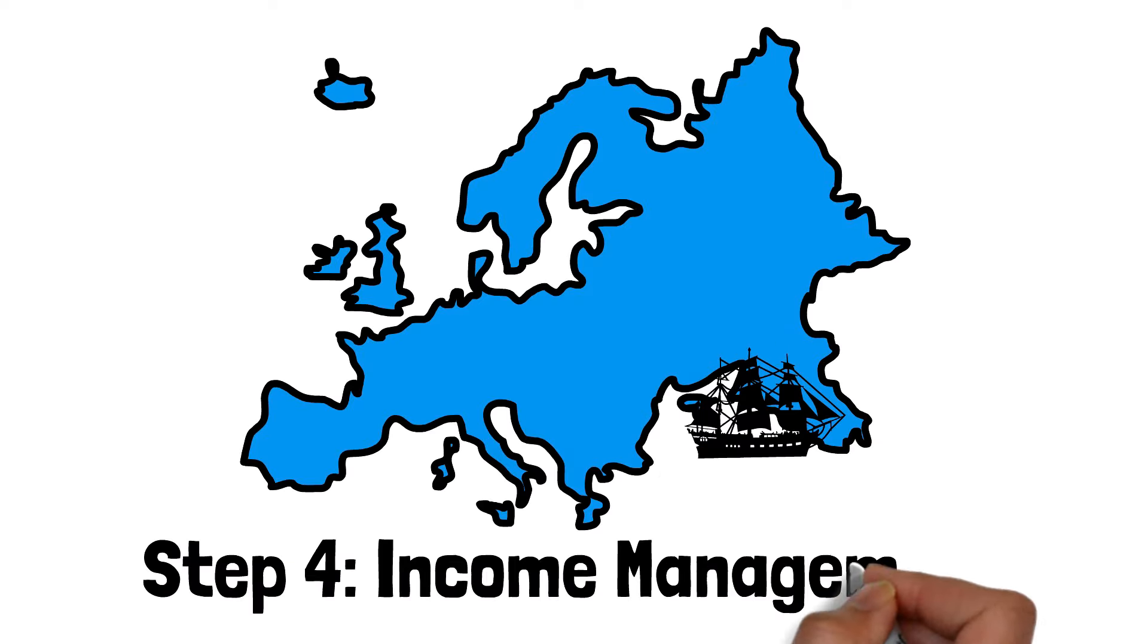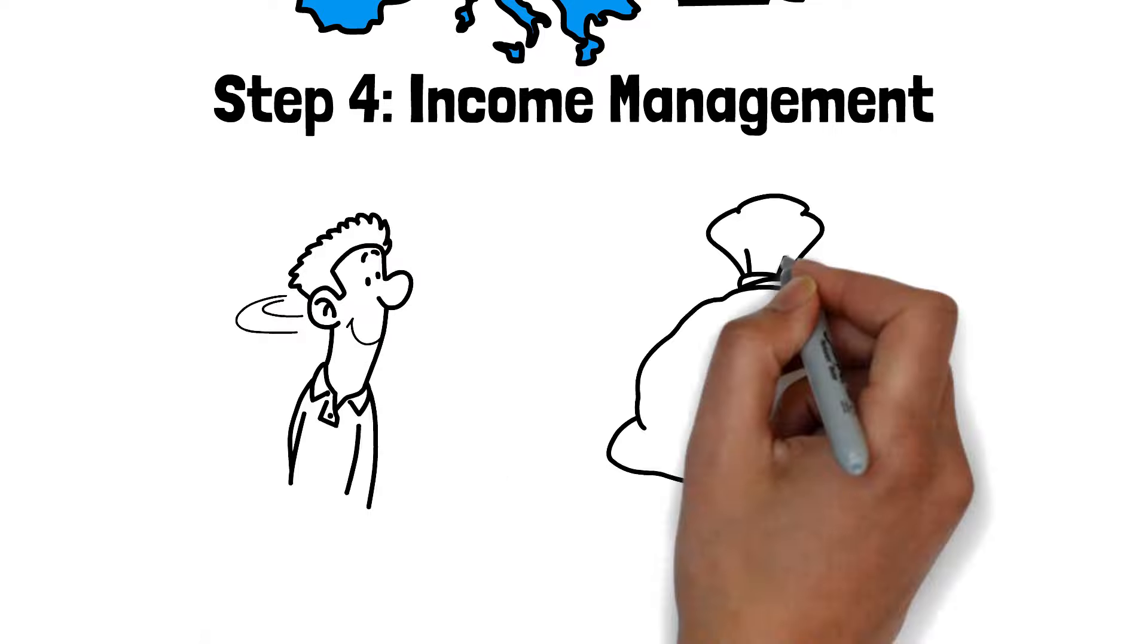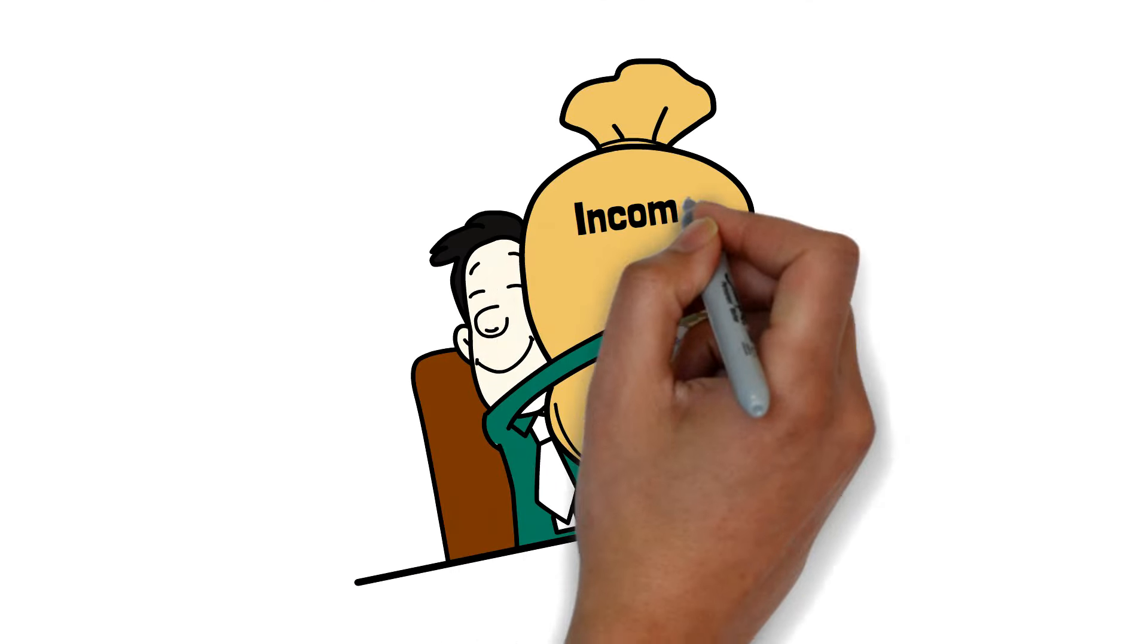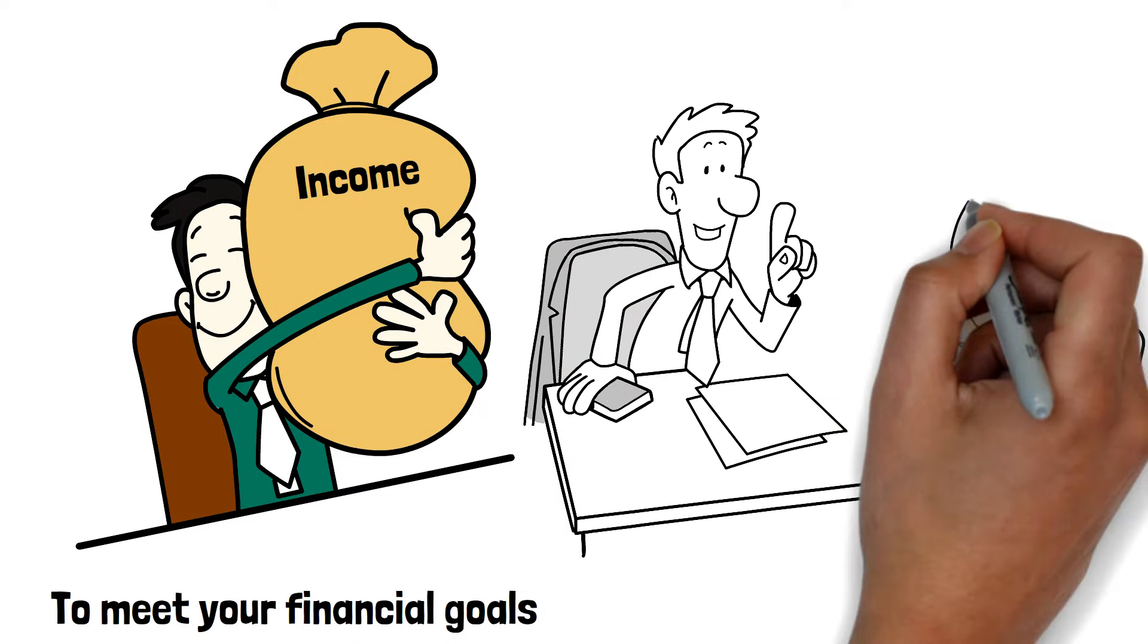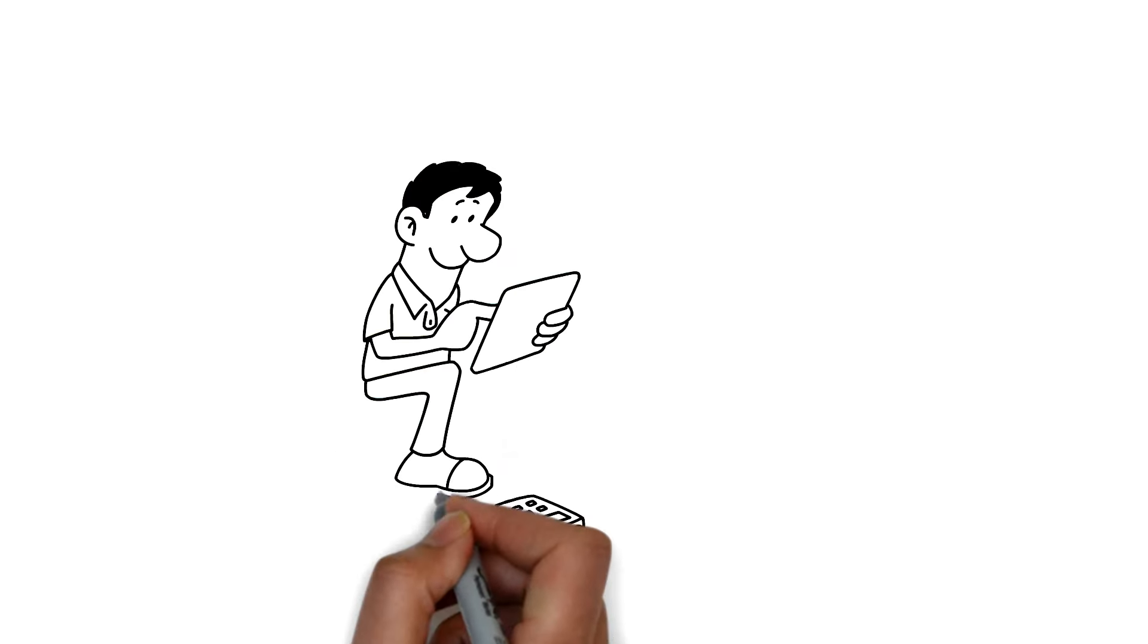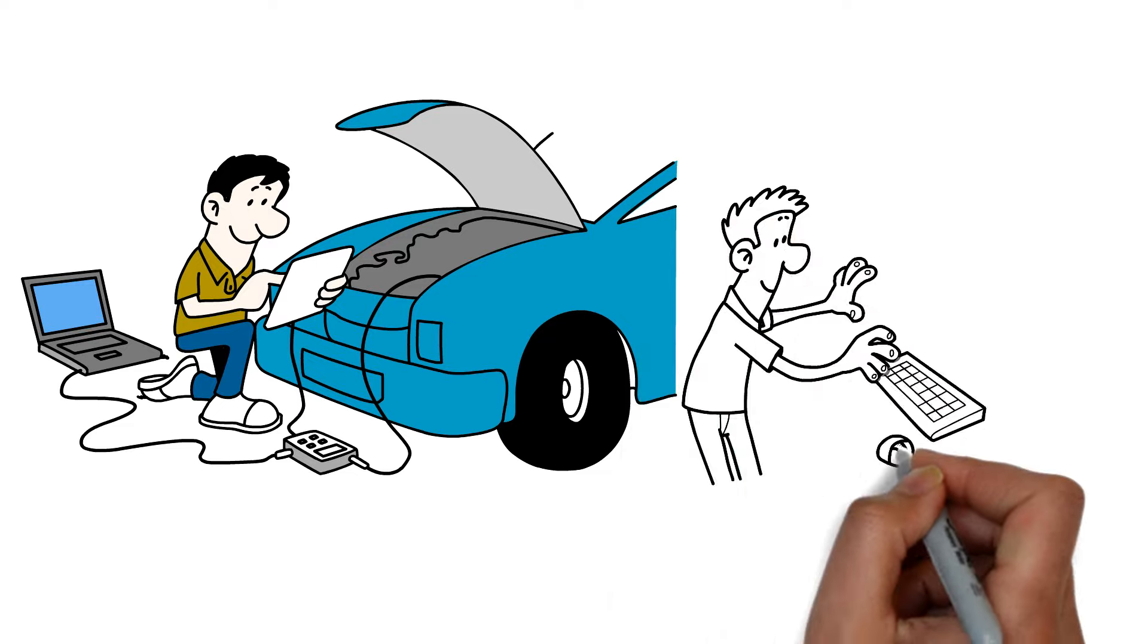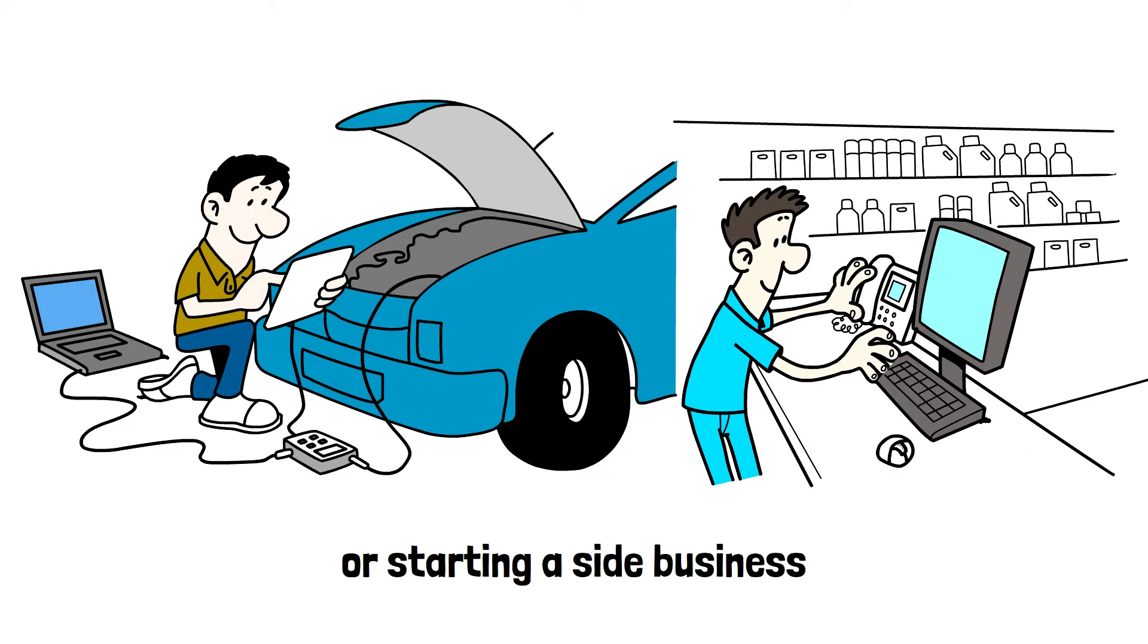Step four, income management. Finally, we have income management. This means making sure you've got enough money coming in to meet your financial goals. You can increase your income by negotiating your salary, taking on a side job, selling unwanted items or starting a side business.